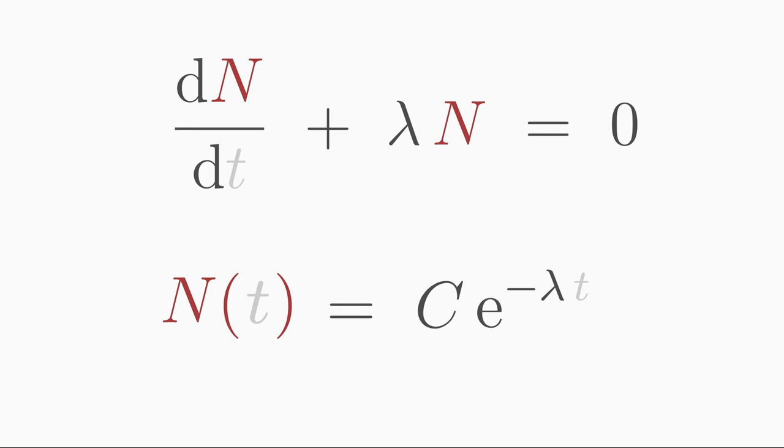Now you know the qualitative behavior of the physical process, namely that atomic nuclei decay exponentially. But you cannot say concretely yet how many nuclei have already decayed after a certain period of time. This is because you don't know the constant c yet.